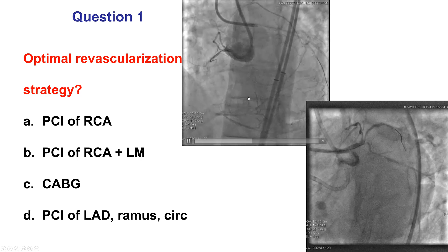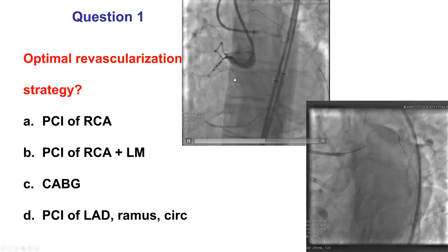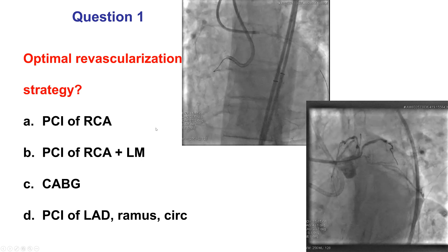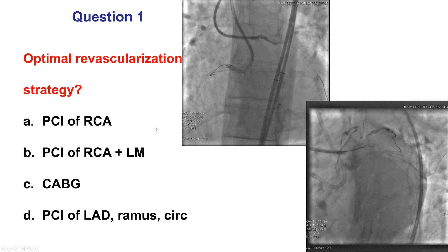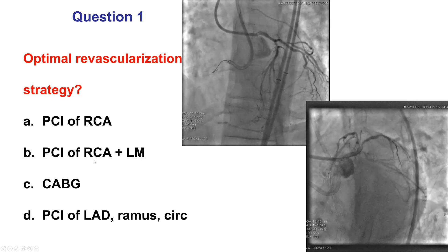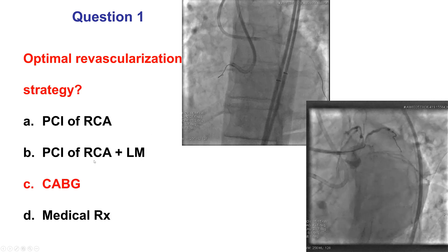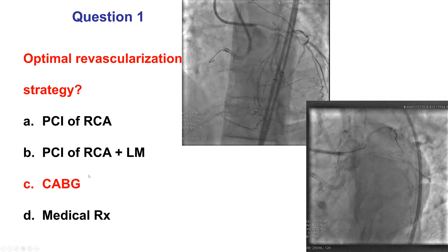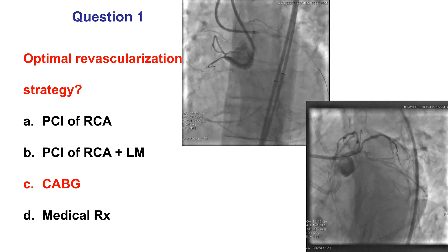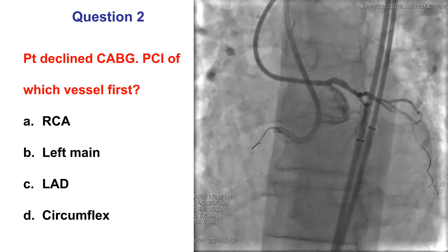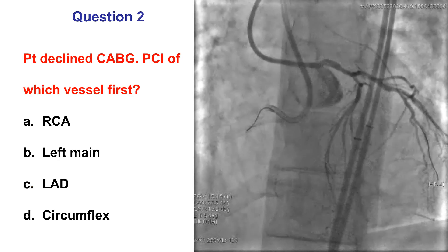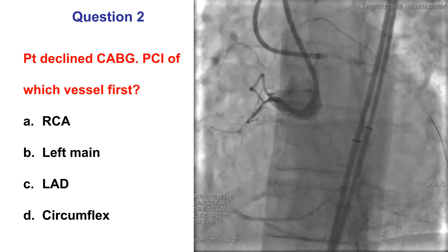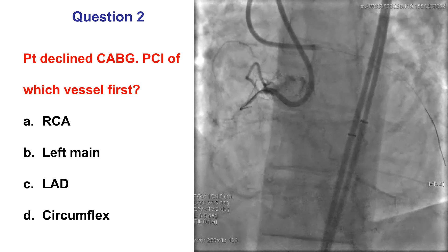This patient has three-vessel disease and a high syntax score, and he's also a good surgical candidate being that he's young without significant comorbidities. So in patients like this, coronary bypass is actually the preferred revascularization strategy. However, the patient declined coronary bypass and was instead referred for percutaneous coronary intervention.